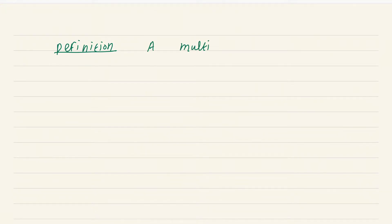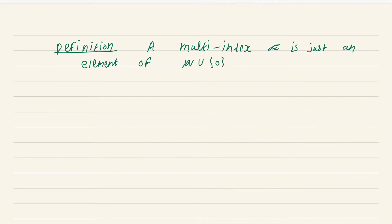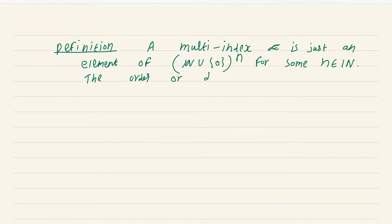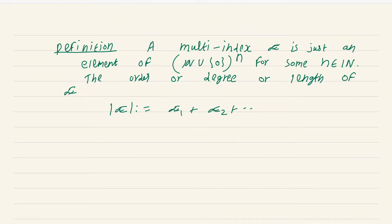A multi-index alpha is just an element of (N ∪ {0})^n for some n in the natural numbers. So a multi-index is just a tuple of non-negative integers. The order, degree, or length of alpha, denoted |alpha|, is just the sum of the various entries: |alpha| = alpha_1 + alpha_2 + ... + alpha_n, where alpha = (alpha_1, ..., alpha_n).